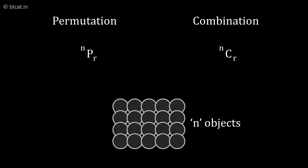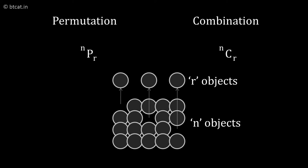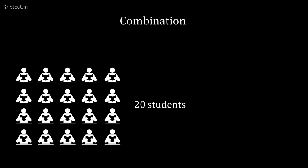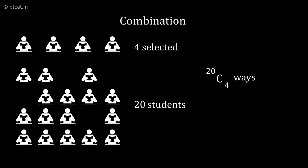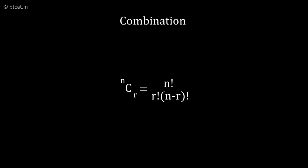NCR basically stands for choosing R objects out of N objects. Whenever we are just making a selection, when we are just choosing, we use NCR. For example, if in a class of 20 students I want to select 4 students, any 4 can come. The number of ways of doing so is 20C4.